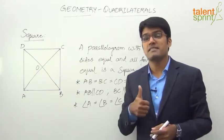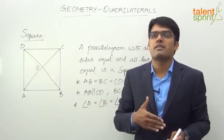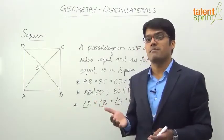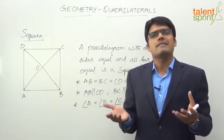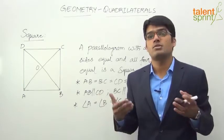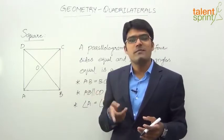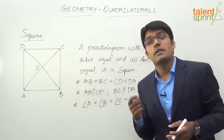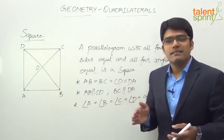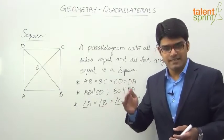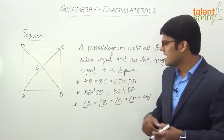The same principle holds true as we discussed for rectangle and rhombus: every rectangle is a parallelogram, but every parallelogram is not a rectangle. Every rhombus is a parallelogram, but every parallelogram is not a rhombus. Same is the case with square — each square can be taken as a parallelogram, but every parallelogram is not a square. Each square can also be taken as a rectangle — a square is a rectangle where all four sides are equal. Every square can also be taken as a rhombus — a square is a rhombus where all four angles are equal. So all squares are rectangles, parallelograms, and rhombuses, but the converse is not true.